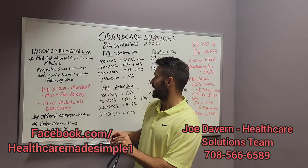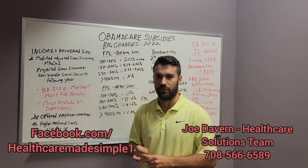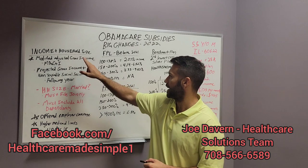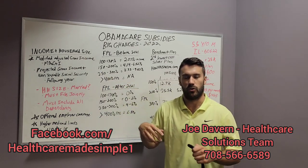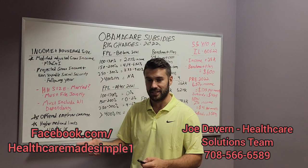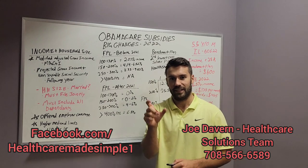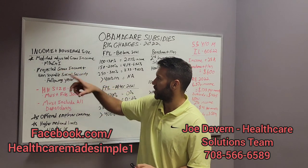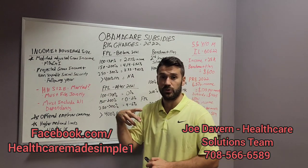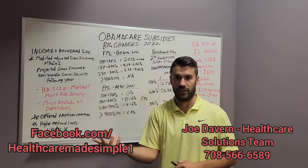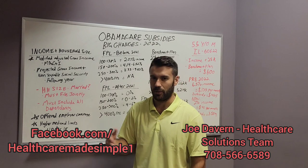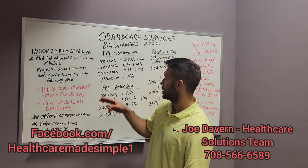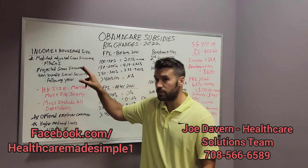When I say income, the number that the government is looking for is this cute little acronym called MAGI — Modified Adjusted Gross Income. So on your Form 1040, on your taxes, you have a line that says Adjusted Gross Income. MAGI adjusts that slightly. It also includes non-taxable Social Security, and then some income most people don't have, like foreign income and things of that nature.